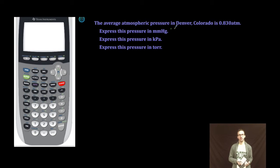The average atmospheric pressure in Denver, Colorado is 0.830 atmospheres. First, we're asked to express the pressure in millimeters mercury.